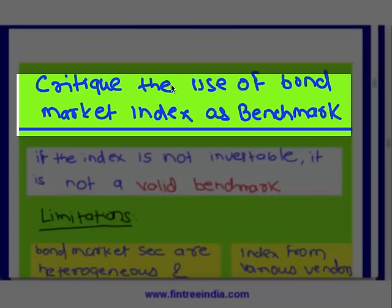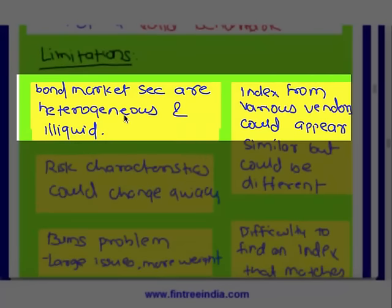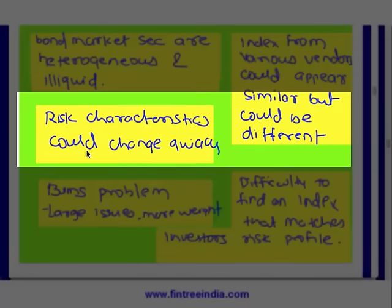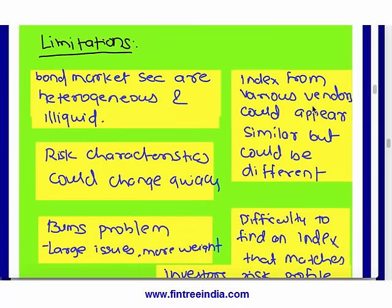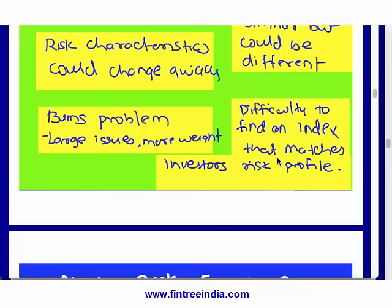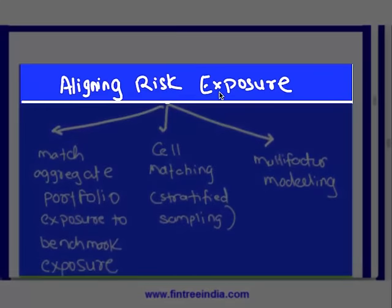The criticism of why a bond market index cannot easily be used as a benchmark relates to the definition of a valid benchmark — it should be investable. Key points: securities are heterogeneous and illiquid, risk characteristics can change quickly, and there is the 'bumps' problem. Also, indexes from different vendors may appear similar but differ — for example, one index may have a large proportion of callable bonds while your portfolio does not. This is why custom indexes are needed.